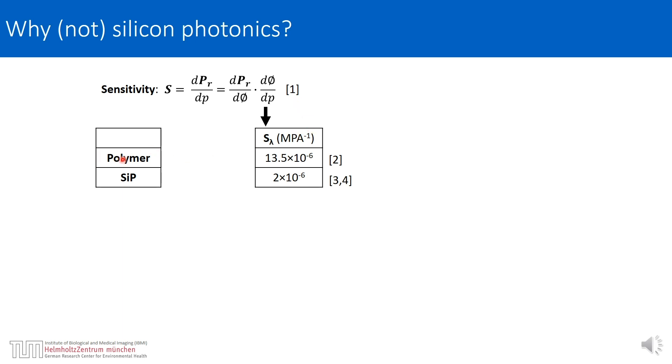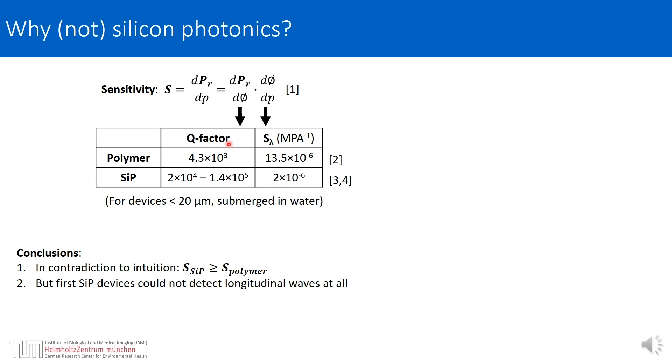Indeed for polymer structures this term is sevenfold larger than for silicon structures, but if you look at the first term in the sensitivity expression which represents the ability of the structure to confine light, we can see that silicon structures can do it much better, actually one or two orders of magnitude better. So potentially, in contradiction to intuition, silicon photonic structures can be more sensitive to ultrasound than polymer structures.